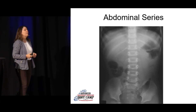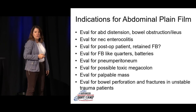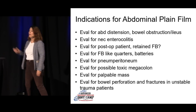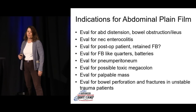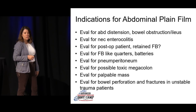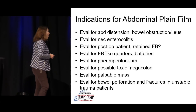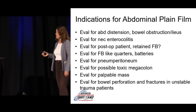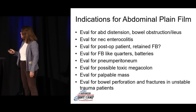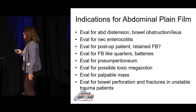A little bit on abdominal series. It's not a film we get a lot in kids, but what are some indications? You might see a bowel obstruction, necrotizing enterocolitis — tends to be a diagnosis of newborns and premature babies in the NICU, though occasionally a normal term newborn might have it. Post-op, retained foreign body — quarters, batteries, things swallowed or inhaled. Pneumoperitoneum, toxic megacolon, palpable mass, bowel perforation. If you have an unstable trauma patient who can't get to CT scan, sometimes we'll do an abdominal x-ray. For most kids we're thinking ileus or bowel obstruction — the kid's vomiting, has a very tender abdomen.